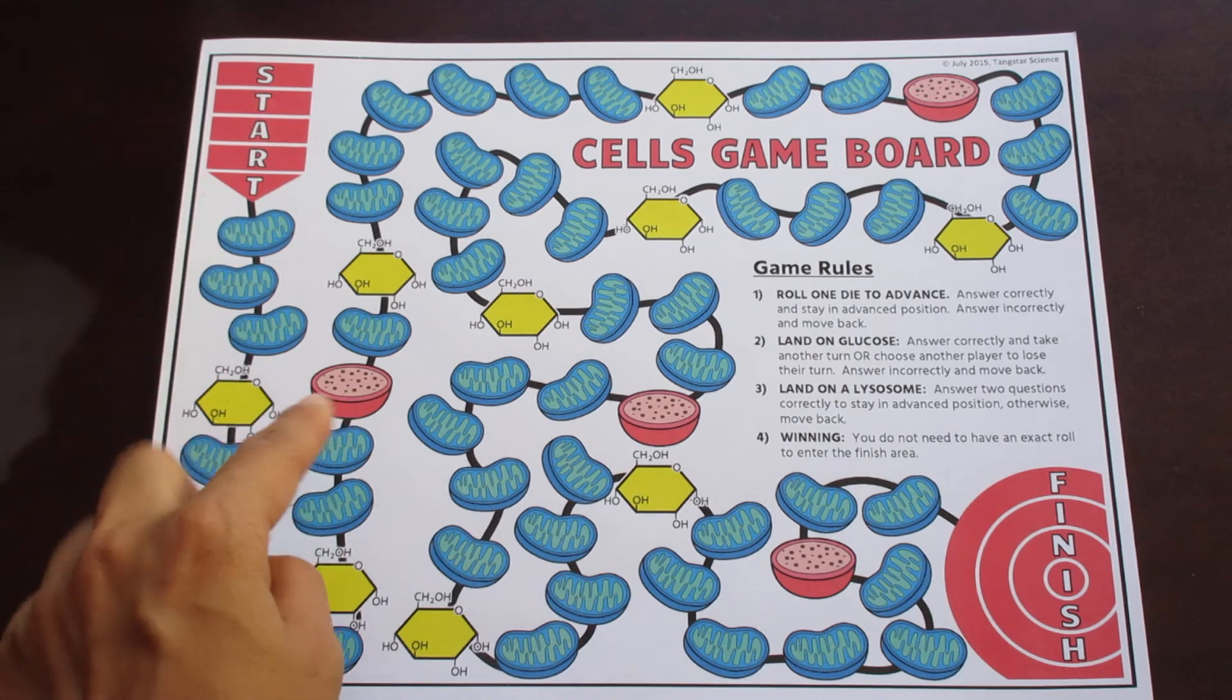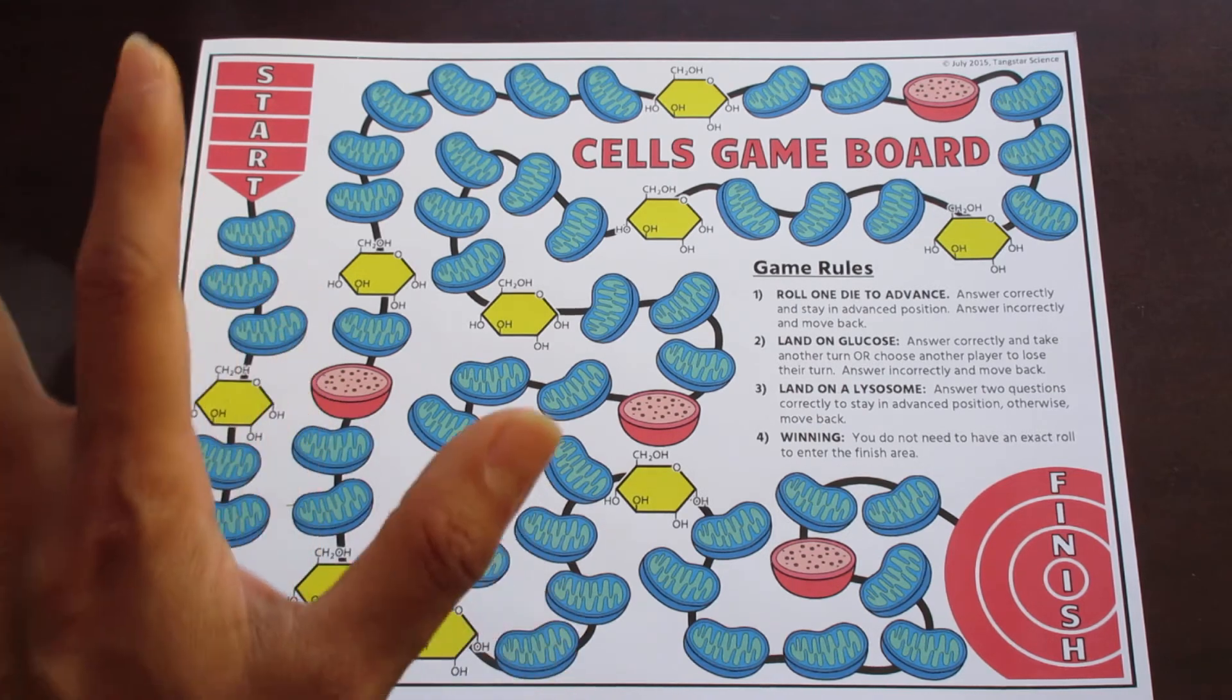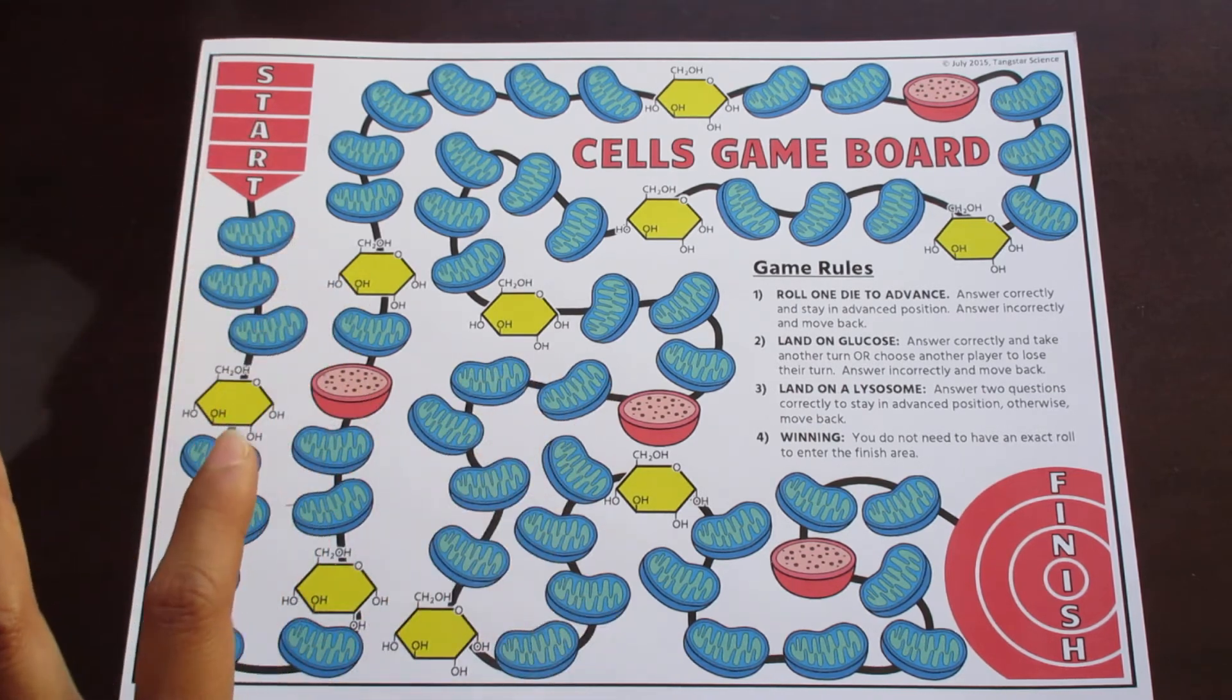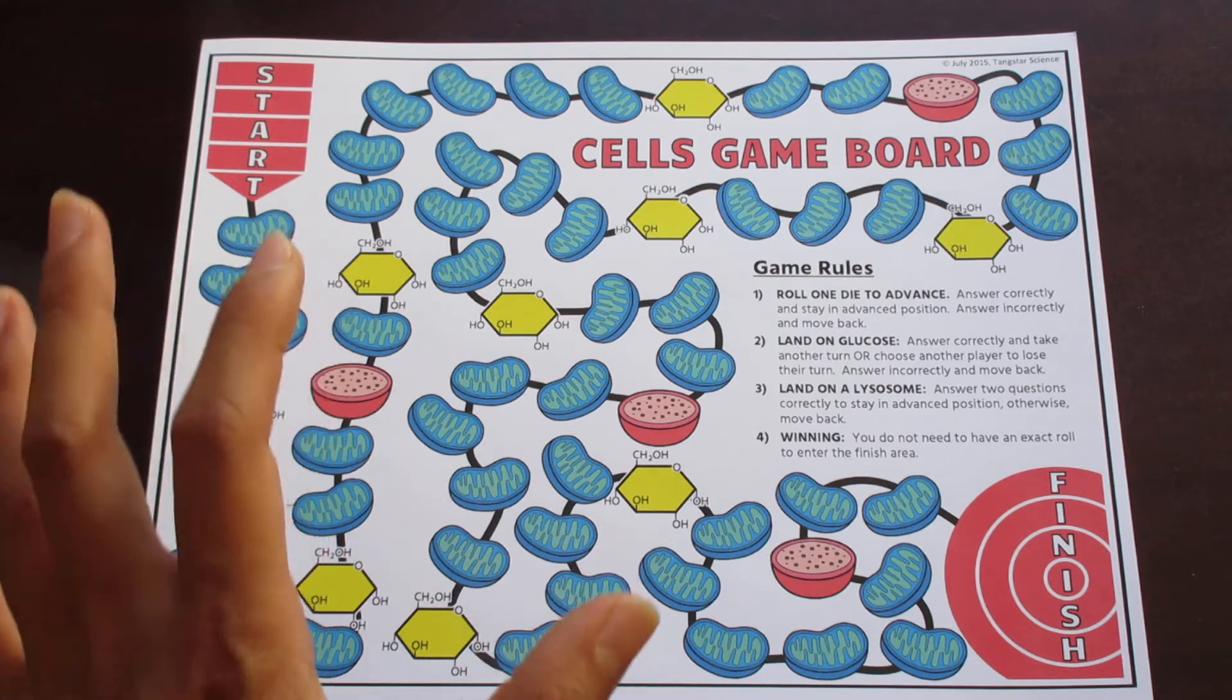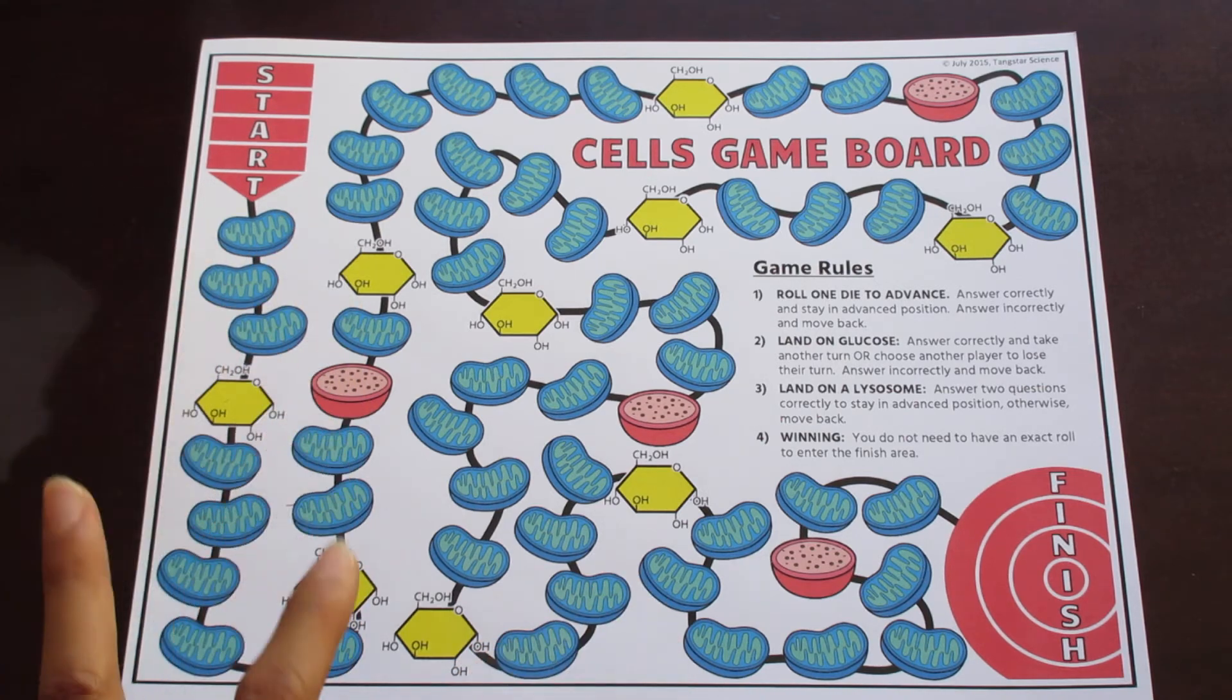If they end up landing on a lysosome, this means that they have to answer two questions correctly to stay in this position. Otherwise, if they answer incorrectly, they move back.